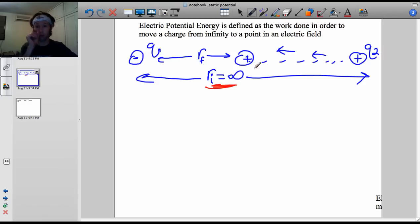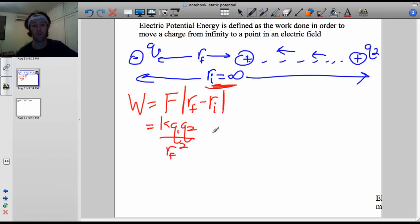A certain amount of work will be done on it by the electric field as it comes in. So to calculate that, there's an integral for work, which we're going to ignore. But from that integral, what it comes down to is force times r final minus r initial, with r final being where it ends up at, and r initial is infinitely far away. So if we distribute that, what it becomes is kq1q2 over r sub f minus kq1q2 over r initial.